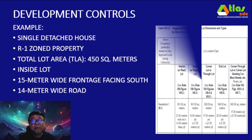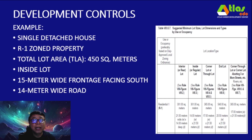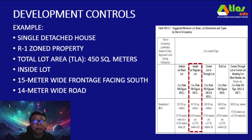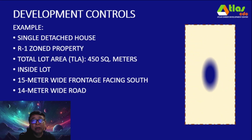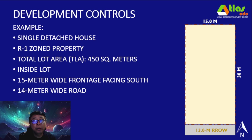If we refer to Table 8.G.7, which shows the suggested minimum lot sizes, we can see that our example here is bigger than the suggested minimum lot size of 301 square meters for an inside lot in R1. We draw the lot — we have a frontage of 15 meters and a depth of 30 meters, facing south to a 14-meter wide road.